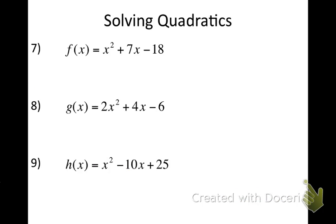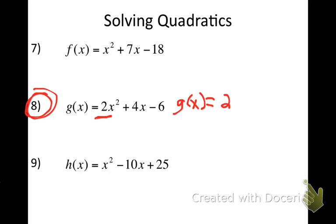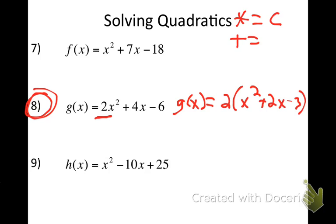Take a couple seconds and try problems 7, 8, and 9. A hint for number 8: notice there's a number in front of the x squared. You can only use the shortcut when the coefficient is 1. On this one, pull out a 2 first, making it g(x) equals 2 times (x squared plus 2x minus 3). Then factor what's inside. Think of what multiplies to get C and adds to get B on all these.